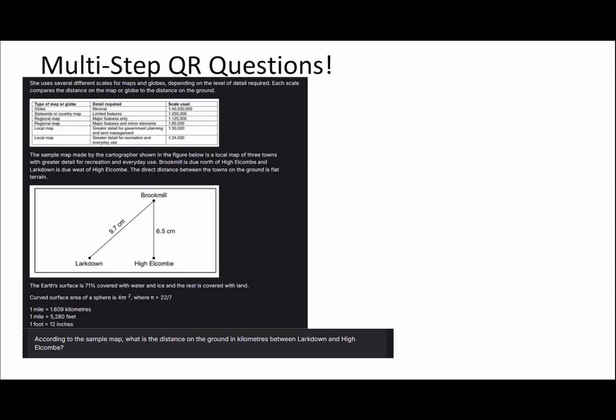According to the sample map, what is the distance on the ground in kilometers between Lockdown and High Outcome? Lockdown and High Outcome is going to be this here. And so you can see this is a bit of Pythagoras. So just 9.7 squared minus 6.5 squared square rooted. So 9.7 squared minus 6.5 squared square rooted gives us 7.2 centimeters. But of course we need to work out the real distance and we need to know first of all what scale they're using. We try and look for the sample map scale. It says it's made by the cartographer, shown in the figure below. So it's a local map of three towns with greater detail for recreation and everyday use. So local map but greater detail for recreation and everyday use. And the scale is 1 to 24,000.